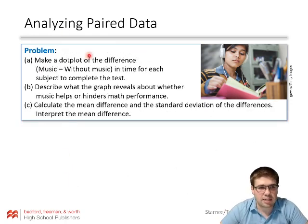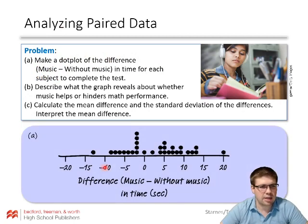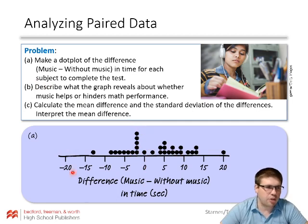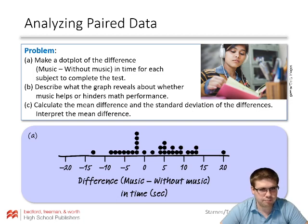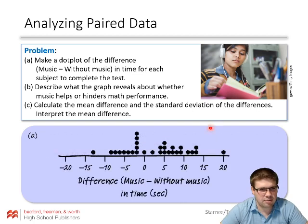We can make a dot plot of the differences — music minus without — in time for each subject to complete the test. The dot plot is centered around zero with some variability on both sides. There is some evidence that music hinders performance on the math test: 17 of the 30 subjects took longer to complete the test when listening to music, so there are 17 dots on the positive side, but it is very weak evidence.